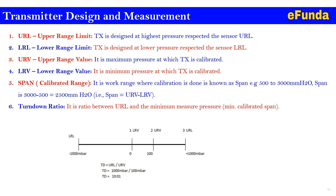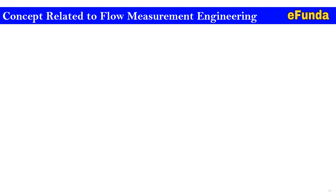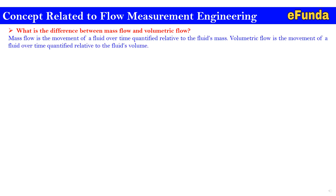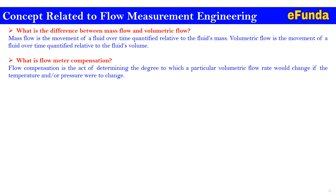After calculating with those values, the turndown ratio comes as 10:1. Regarding concepts related to flow measurement engineering: what is the difference between mass flow and volumetric flow? Mass flow is the movement of a fluid over time quantified relative to the fluid's mass, while volumetric flow is quantified relative to the fluid's volume. Flow compensation is the act of determining the degree to which a particular volumetric flow rate would change if there is a change in temperature or pressure.